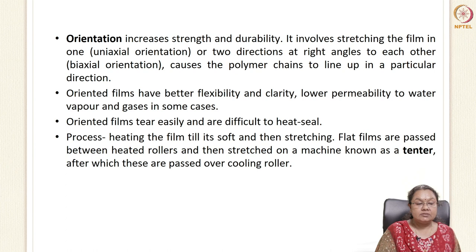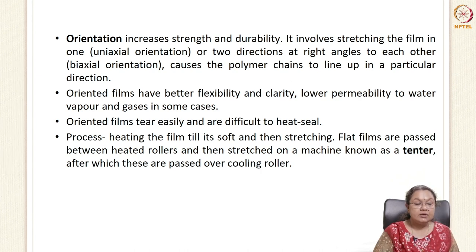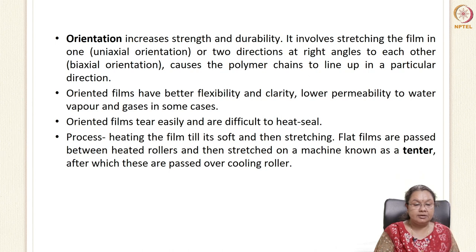Orientation is another process which increases the strength and durability of films. It involves stretching the film in one axis — uniaxial orientation — or in two directions at right angles to each other — biaxial orientation. This helps polymer chains to line up in a particular direction, increasing strength and durability. Oriented films also have better flexibility and clarity, but permeability to water and gases comes down. Oriented films tear easily; the process involves heating the film till soft, stretching it using a tenter, and then cooling on cooling rollers.